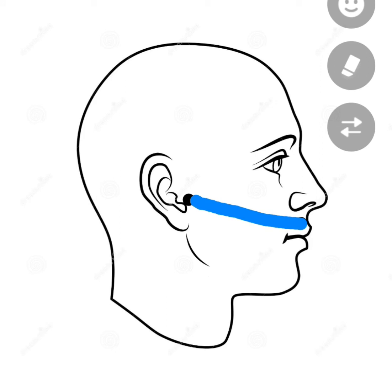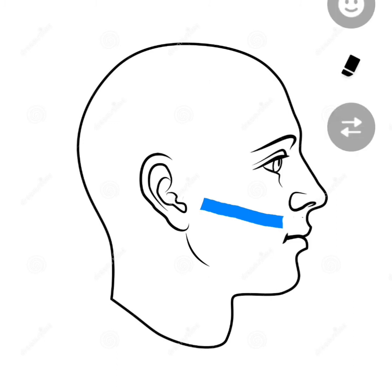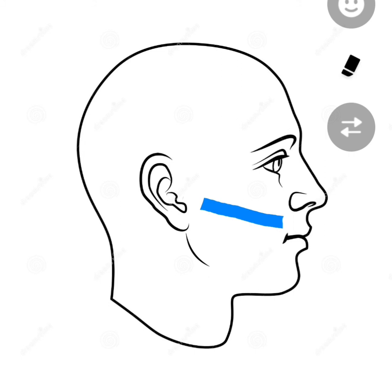The parotid duct is 5 centimeters long, and the middle one-third is the parotid duct. The parotid duct opens into the vestibule of the mouth opposite to the crown of the upper second molar tooth.